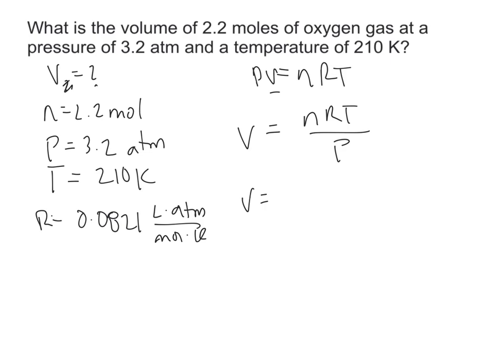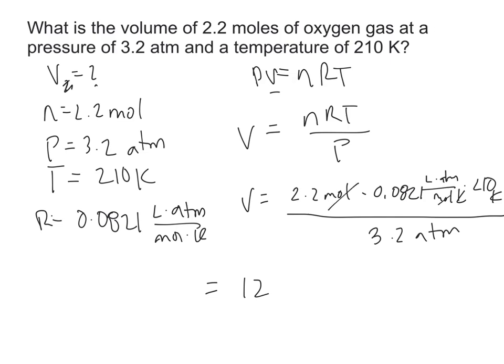So 2.2 moles times R, 0.0821 liter atm per mole kelvin, and then our temperature is 210 kelvin, divide that all out by our pressure, which is 3.2 atm. If we plug this into our calculator, we end up with 12. Our unit evaluation: moles and moles cancel, kelvin and kelvin cancels, atm and atm is going to cancel, liters are left over. So that leaves us with 12 liters. If I have 2.2 moles of oxygen gas at 3.2 atm and a temperature of 210 kelvin, I'm going to have 12 liters of that oxygen gas.